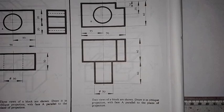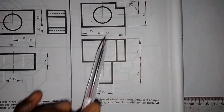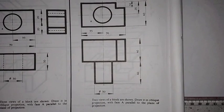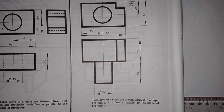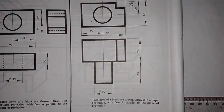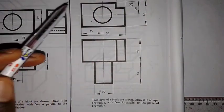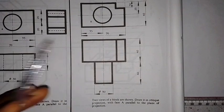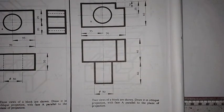Welcome to my channel. I will be explaining how you can solve this particular problem. As we have here, there are two views of a block as shown. Draw it in oblique projection with face A parallel to the plane of projection. This is face A that they are referring to, and these views are given in first angle projection. This is the front elevation and this is the plan.